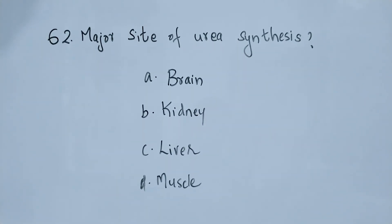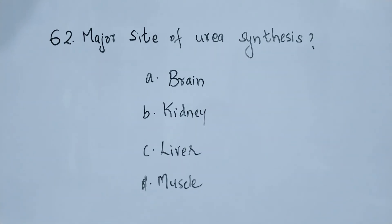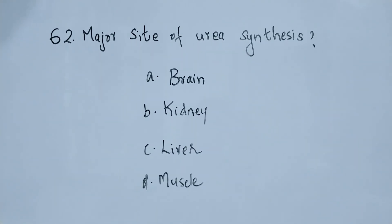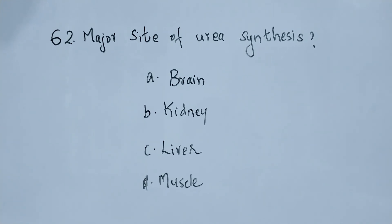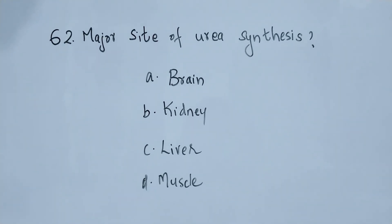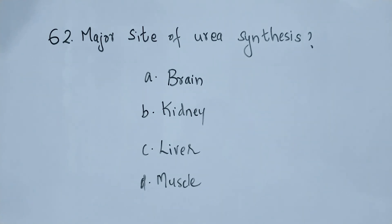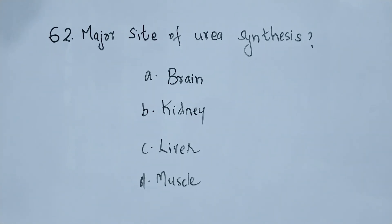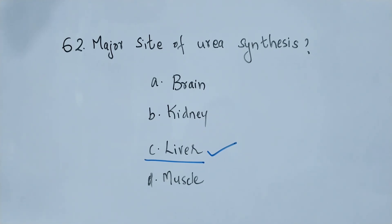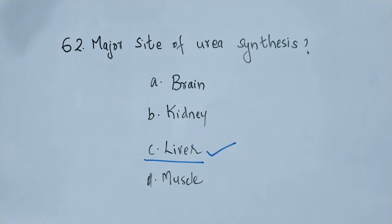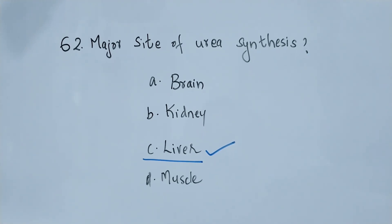Question number 62. Major site of urea synthesis: option A brain, option B kidney, option C liver, option D muscle. The right answer is option C, liver. The major site of urea synthesis is the liver.